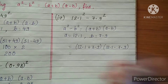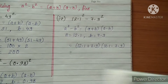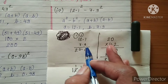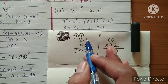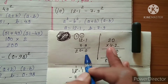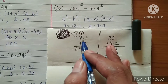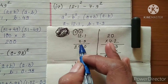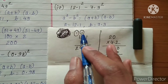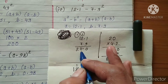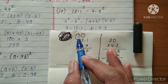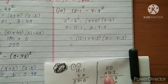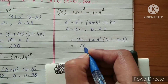Adding 12.1 and 7.9: 9 plus 1 is 10, write 0 carry 1; decimal in the same line; 2 plus 7 is 9, plus 1 carry is 10, write 0 carry 1; 1 plus 1 is 2. So we get 20.